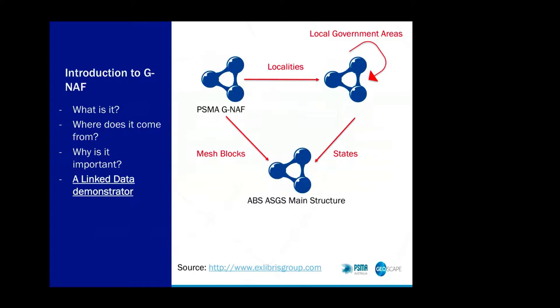They received a number of requests for a standards-compliant, web-accessible and queryable endpoint. So PSMA thought it could accomplish this through publication of the data set as linked data, and went about publishing GNAF and some administrative boundaries, connecting them to a similar publication task that the ABS were considering. What we looked at doing is publishing GNAF, localities, and local government areas, assisting in the publication of the Australian Statistical Geographic Standard main structure, and linking the data sets all together.